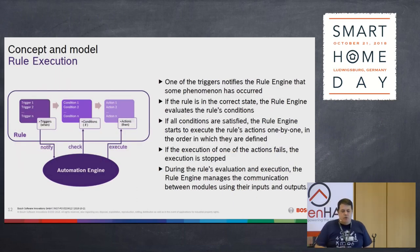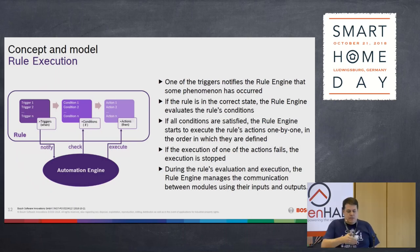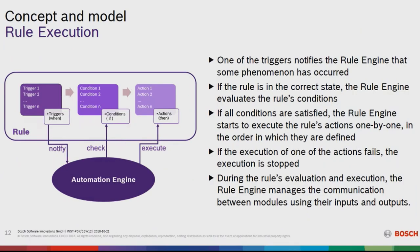This is essentially an if/then/when flow. When something has been triggered, the automation engine is notified, it checks the conditions for the specific rule, and when all conditions are met, the action starts. If the execution cannot proceed, the rule stops.